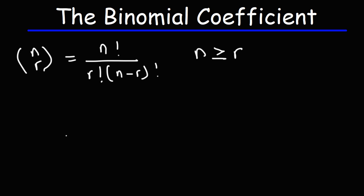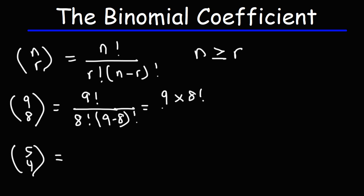Now let's see what happens when n is just 1 unit above r. Go ahead and try these two. So this is going to be 9 factorial over 8 factorial times 9 minus 8 factorial. 9 factorial is going to be 9 times 8 factorial. And 9 minus 8, that's going to be 1, so we have 1 factorial. 8 factorial will cancel.